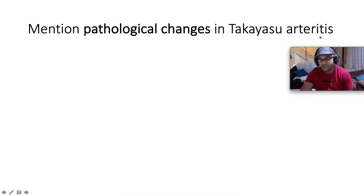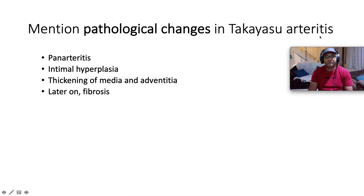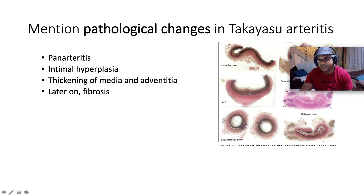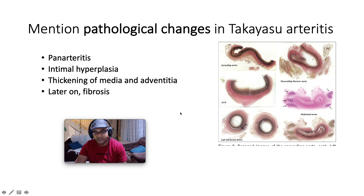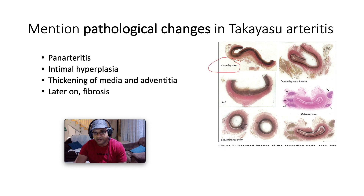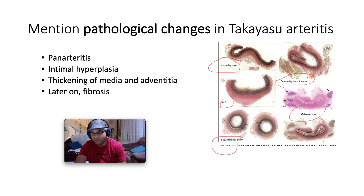The main pathological changes in Takayasu arthritis: it's a panarteritis involving all three layers of the blood vessel wall. We have intimal hyperplasia, thickening of the media and adventitia, and later on fibrosis. A histopathological specimen shows involvement of the ascending aorta, descending thoracic aorta, with intimal hyperplasia and fibrosis affecting the aortic arch, the left subclavian, and the abdominal aorta.